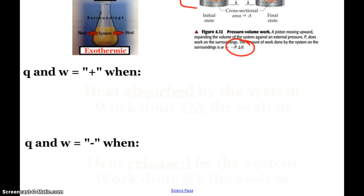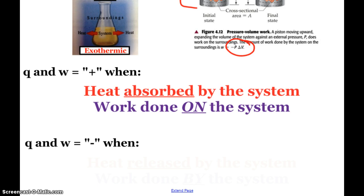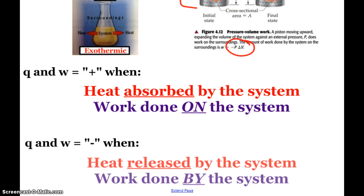But just as a little summary, heat and work are positive when heat is absorbed by the system or when work is done on the system. They have a negative value, heat when it's released by the system, and work when it's done by the system. And that would be the gas in a reaction working on the atmosphere.